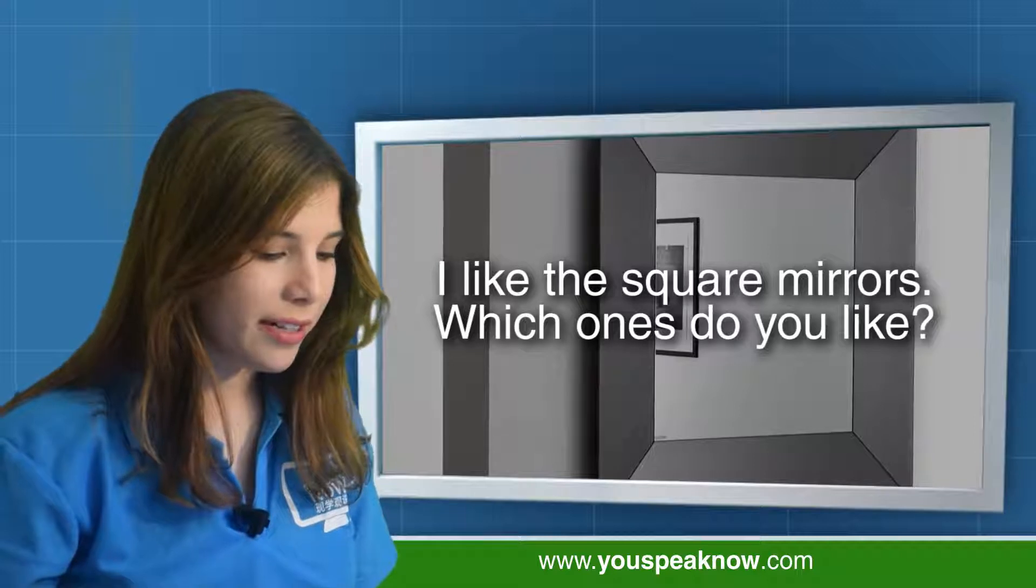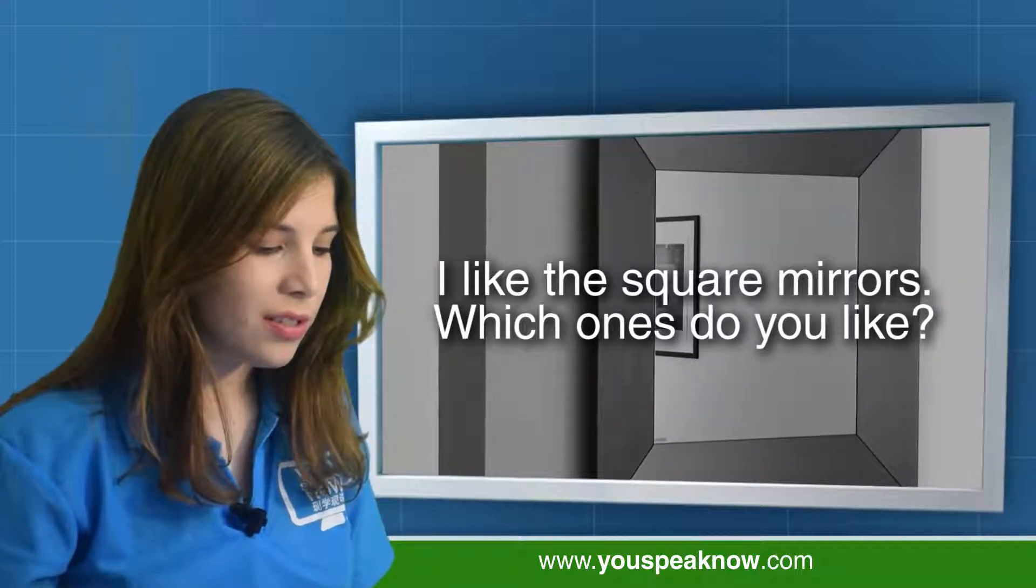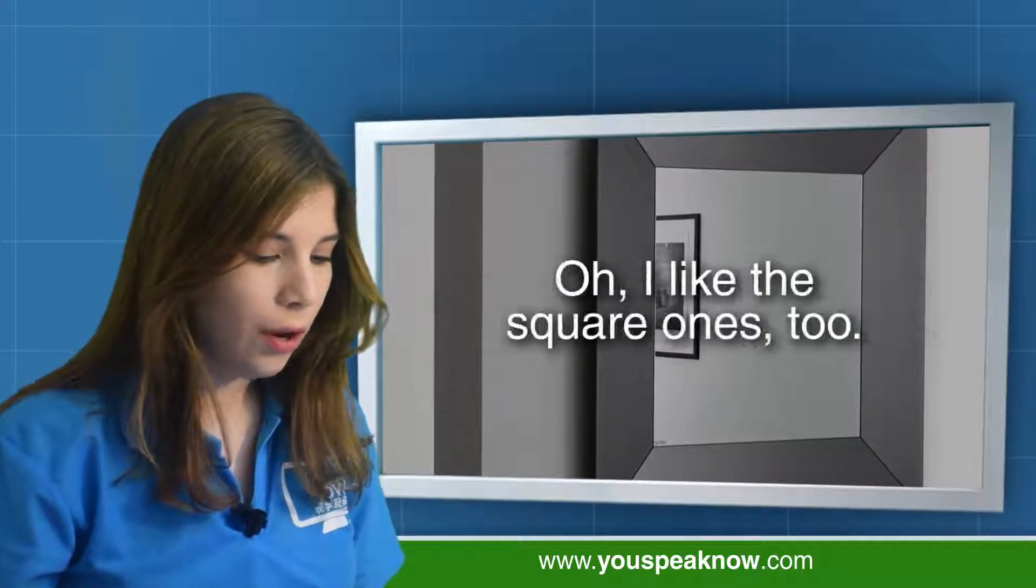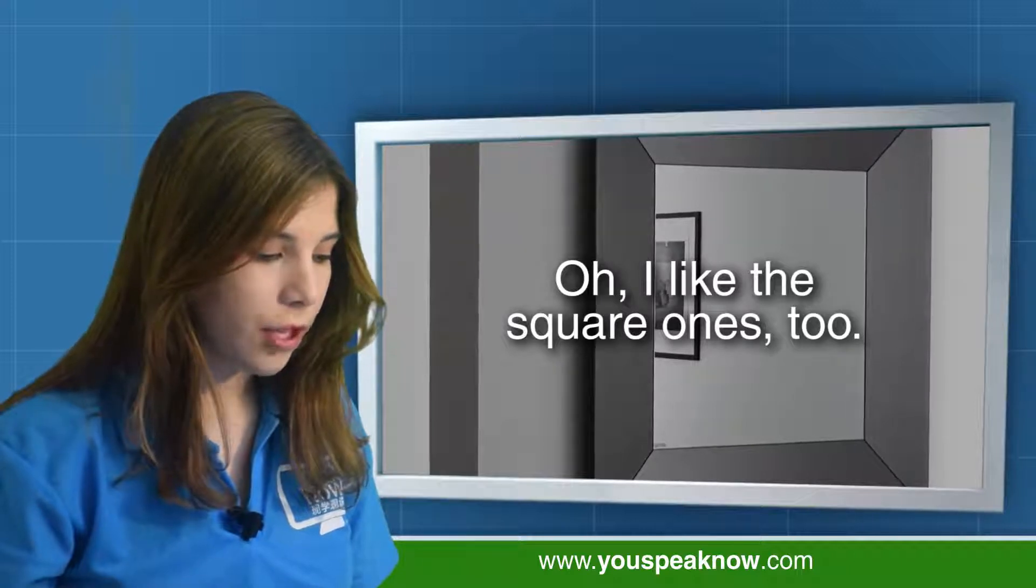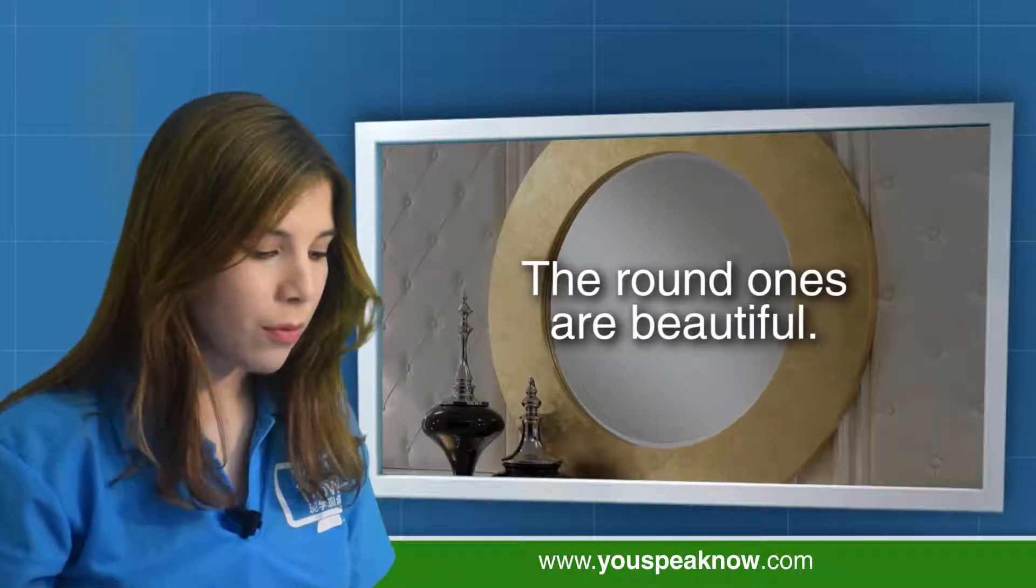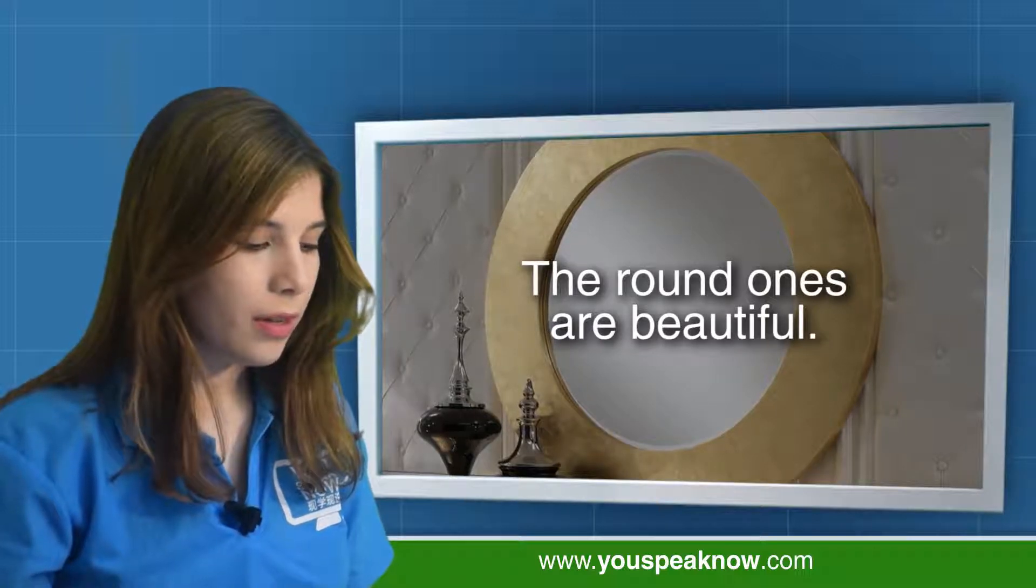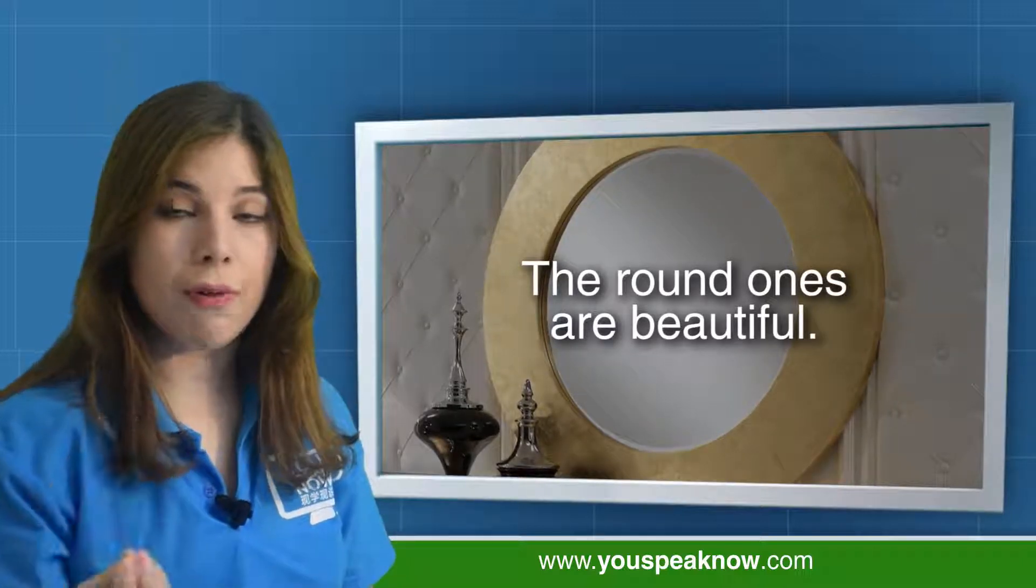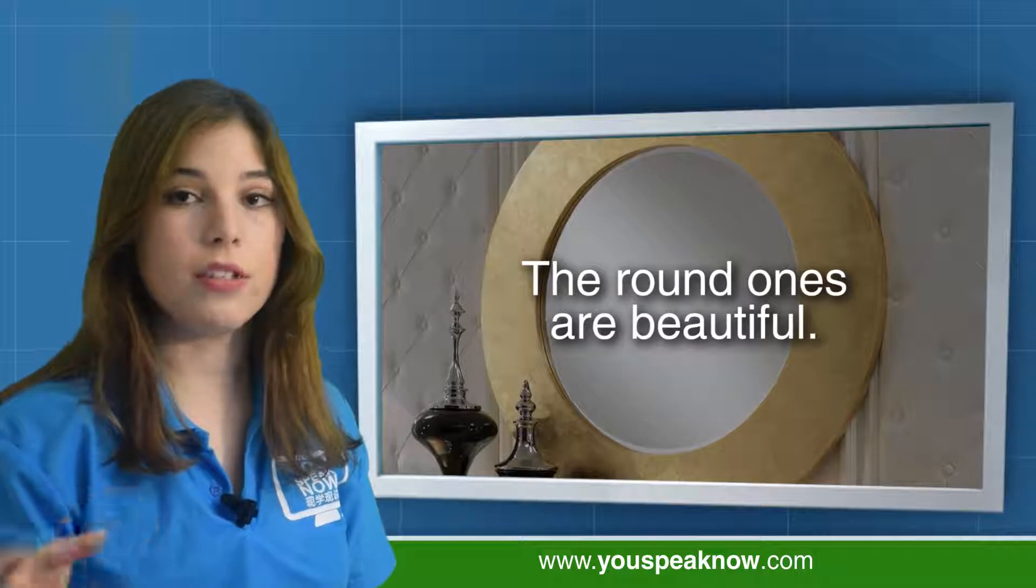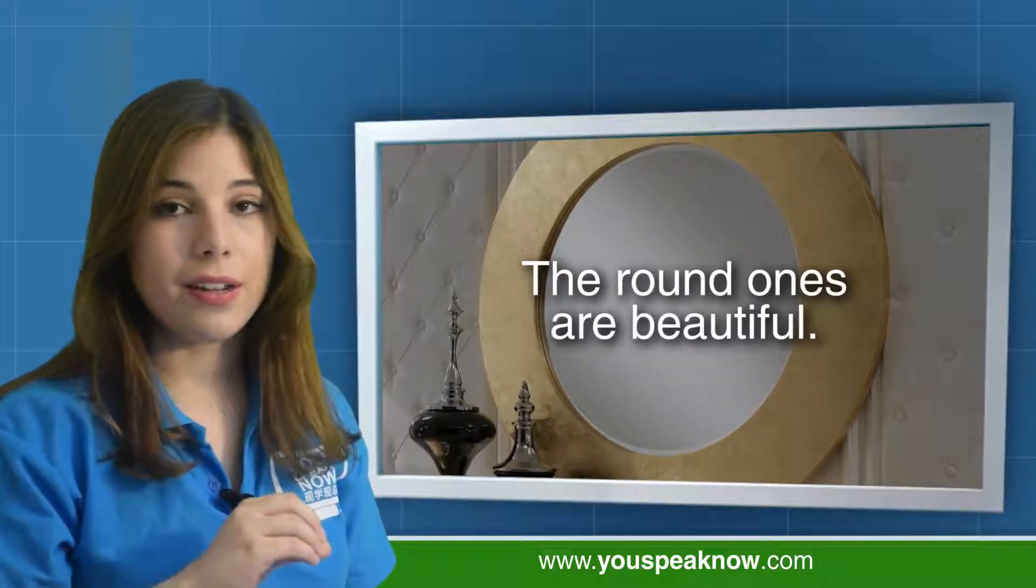I like the square mirrors. Which ones do you like? Oh, I like the square ones too. The round ones are beautiful. So, round is the shape. It's a shape adjective. It's for circle.